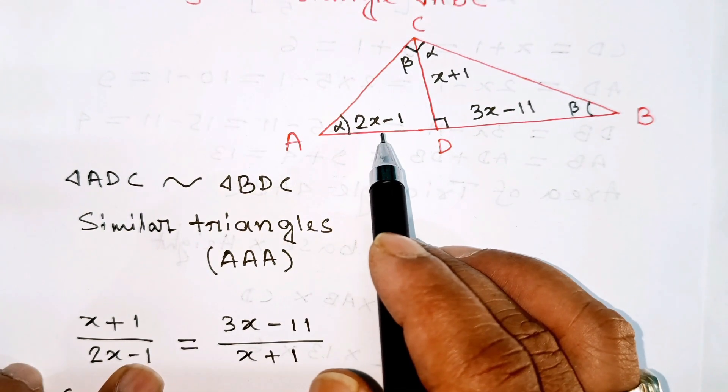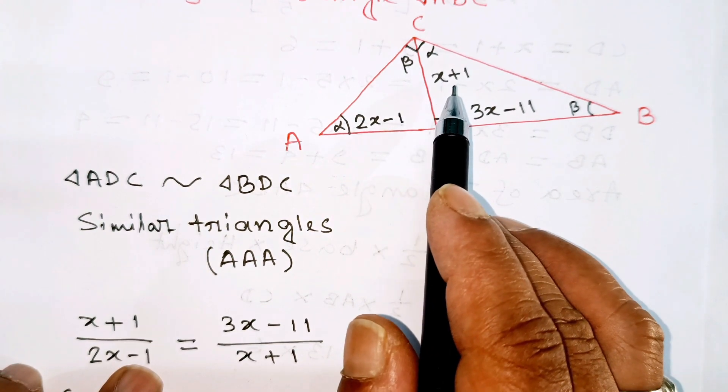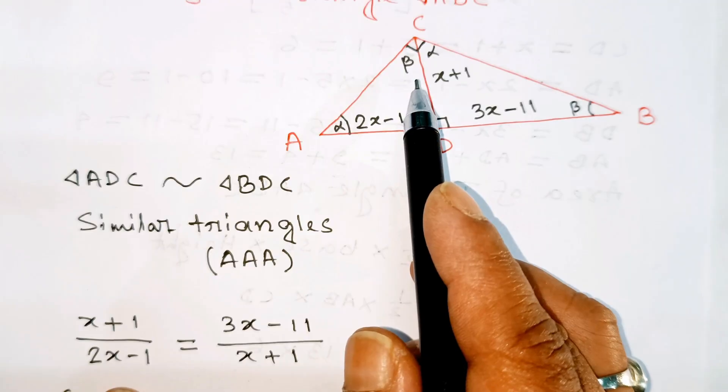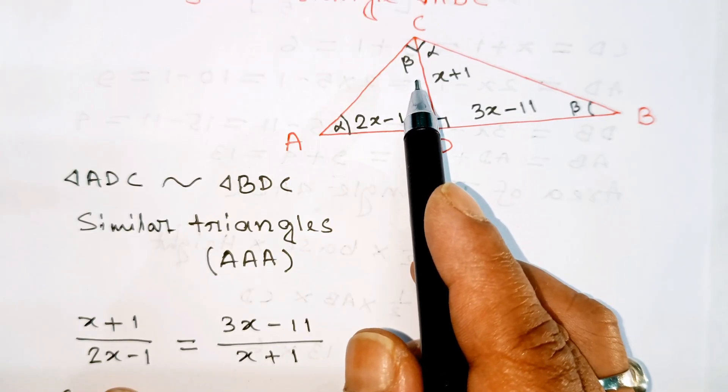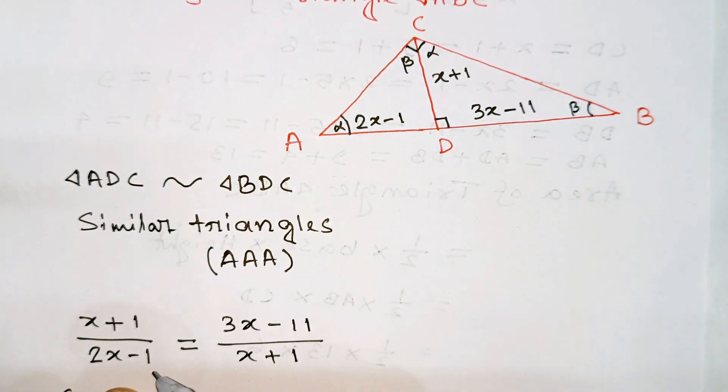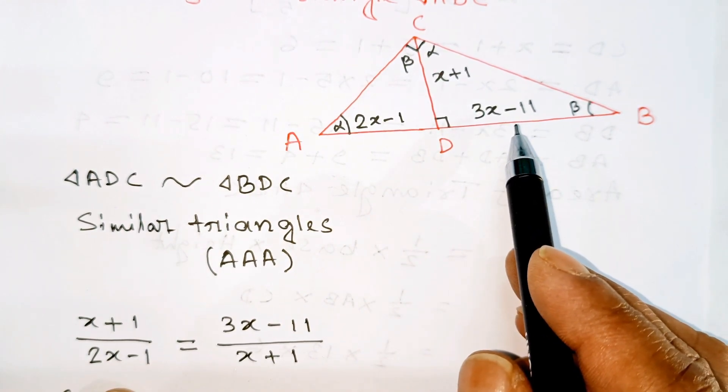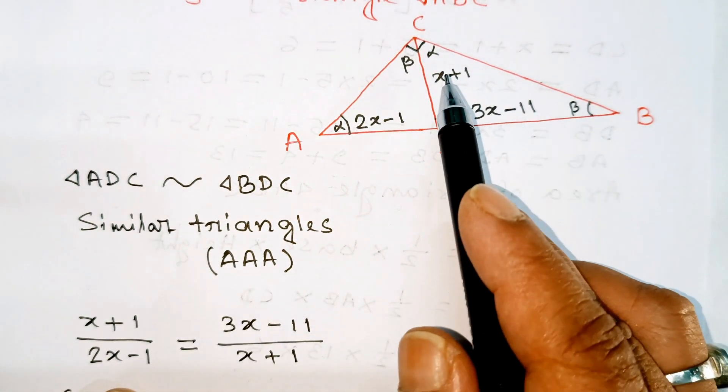The proportion is: the side opposite to angle alpha, x plus 1, divided by the side opposite to angle beta, 2x minus 1, equals 3x minus 11 divided by x plus 1.